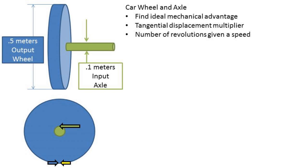In continuation of my simple machine videos, we are going to talk about wheels and axles today. In this video, we'll be finding the ideal mechanical advantage, tangential displacement multiplier, and number of rotations per minute given a displacement over time.